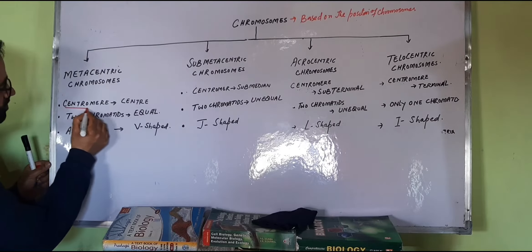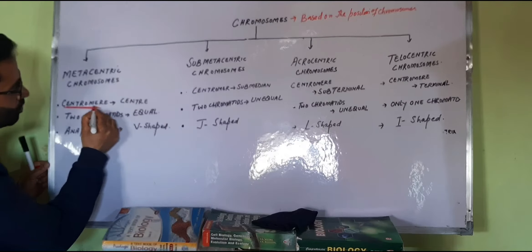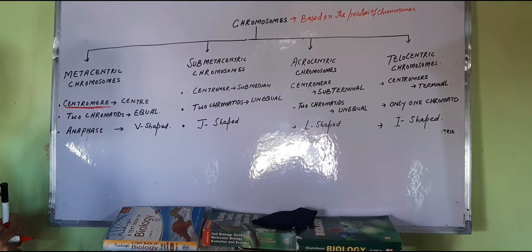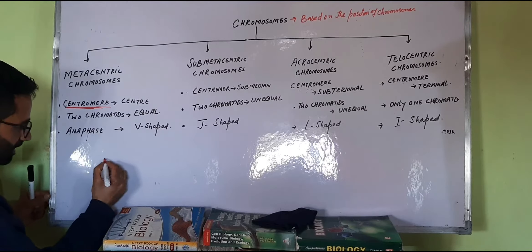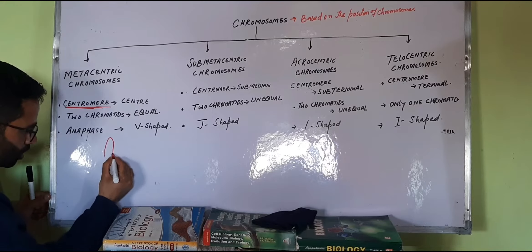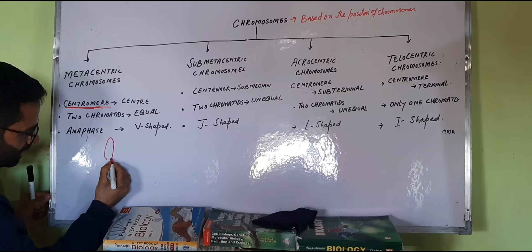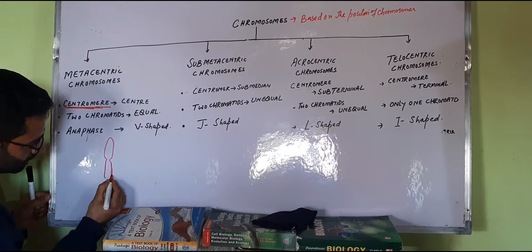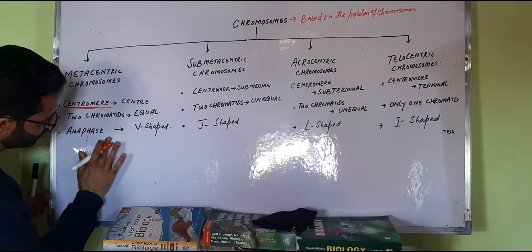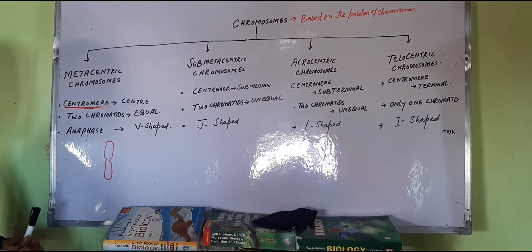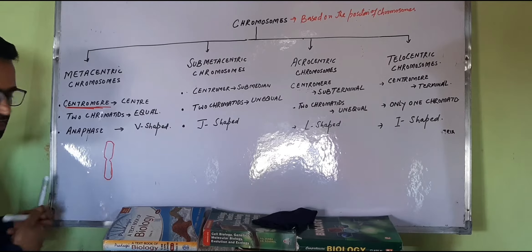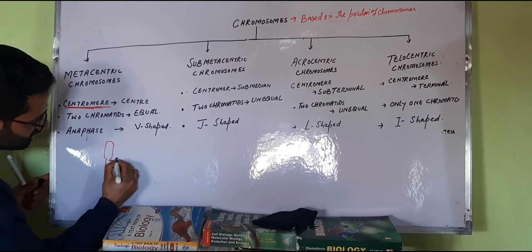In the case of metacentric chromosomes, the centromere or the primary constriction is present at the center or at the median position. If I draw the chromosome here, with one arm and the second arm, the two arms are equal in size because the centromere is present at the center.